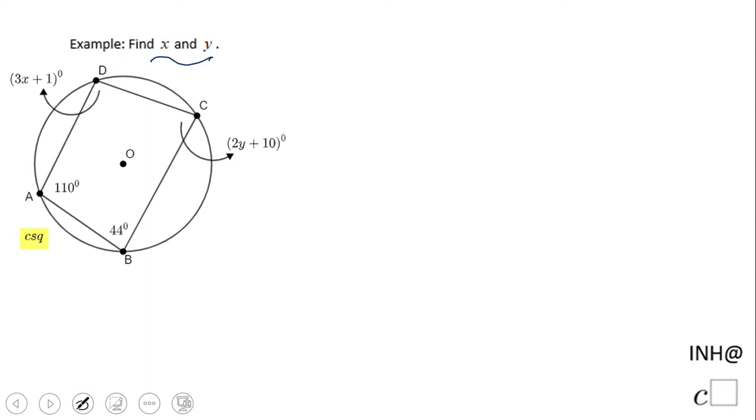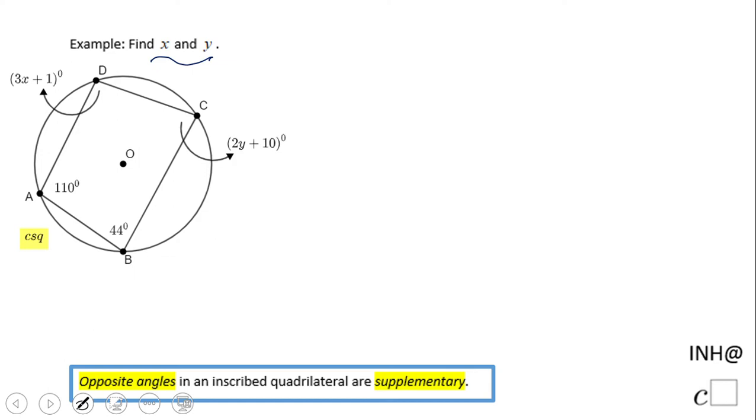We do have some important property. It's right here. Opposite angles in an inscribed quadrilateral are supplementary. Angle A and angle C are supplementary, and angle B and angle D are supplementary.